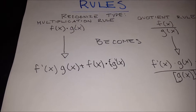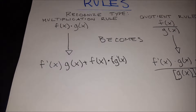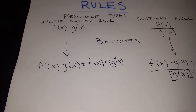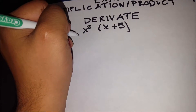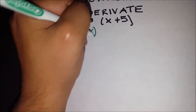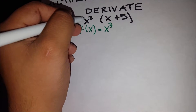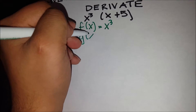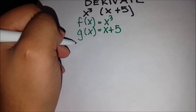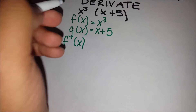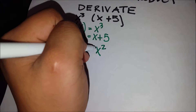In order to apply the product rule, we multiply the derivative of the first function by the second function, then add the original function times the derivative of the second function. The derivative of f of x, which is x cubed, is 3x squared — you bring down the exponent and multiply.